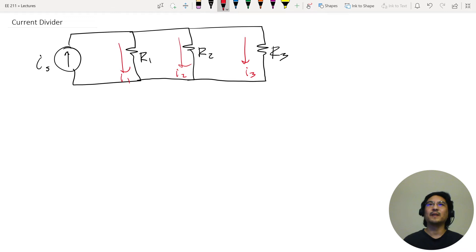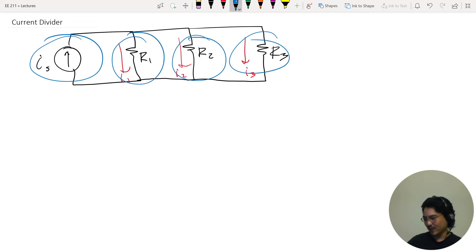Okay, and so how do we solve for these currents? We know that they're all in parallel, right? This is all the same node up here, and this is all the same node down here. So the voltage across this source is the same as the voltage here, same as here, same as here. All in parallel.